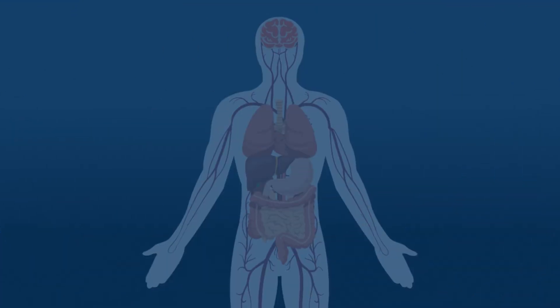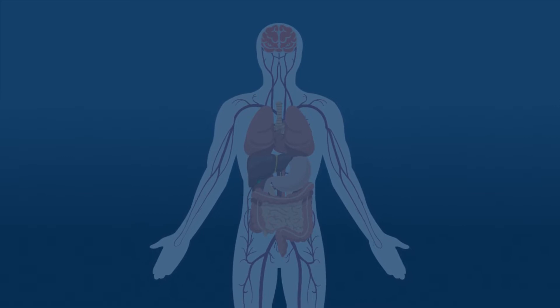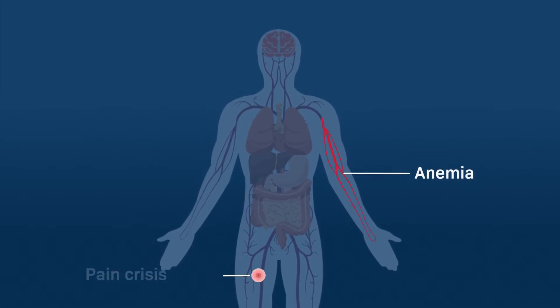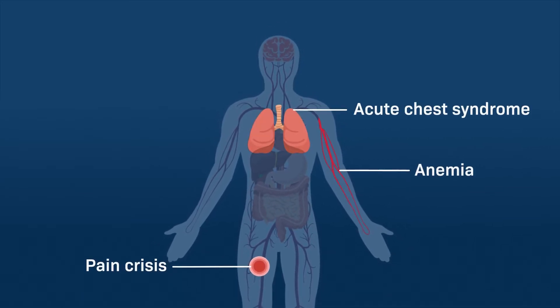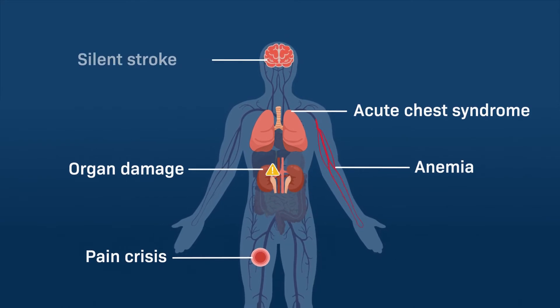Typical symptoms of sickle cell anemia include anemia, pain crisis, acute chest syndrome, organ damage, and silent stroke.